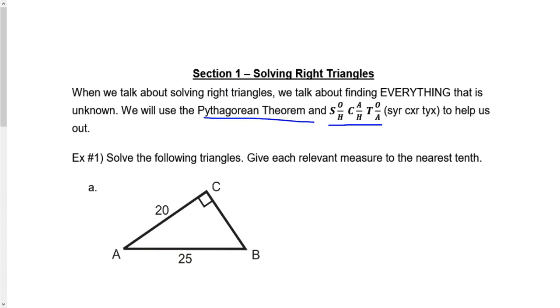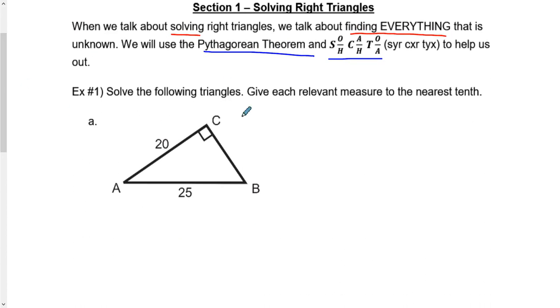Of course, when we talk about solving any kind of triangle, we talk about finding everything. So we want to find out this triangle. We're going to find every single relevant measure to the nearest tenth. We're going to find out every single information, which means we're going to solve for what is this, what is this, and what is that. We're going to solve for each side, each angle.